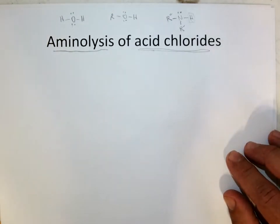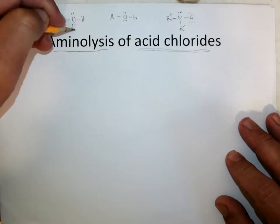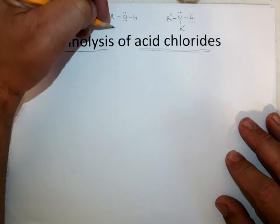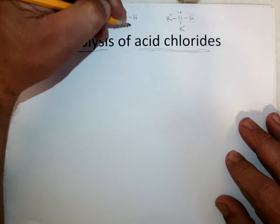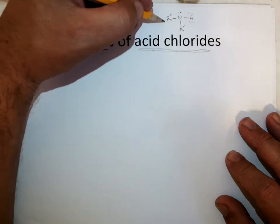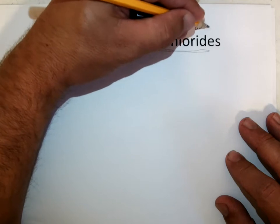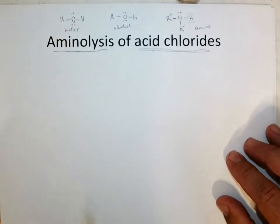But this, an amine or an ammonia, would react similarly to water or an alcohol in this type of reaction. So water led to hydrolysis. And alcohol led to alcoholosis. And then an amine leads to aminolysis,